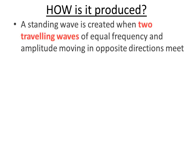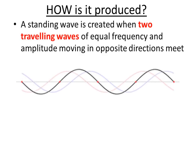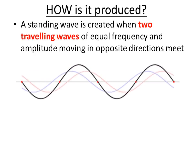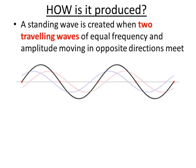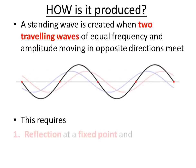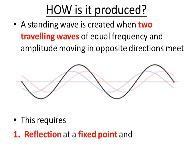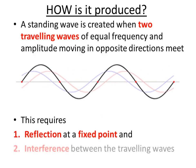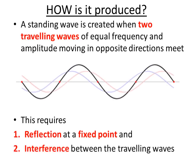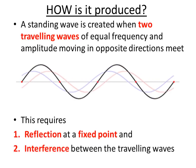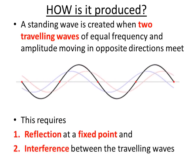So it's important that you could describe how it's produced. You need two travelling waves of roughly, if not equal, the same frequency and amplitude moving in opposite directions. In order to do this, you're going to need waves reflecting, at least one wave reflecting on fixed points, and the waves are going to need to be able to interfere.